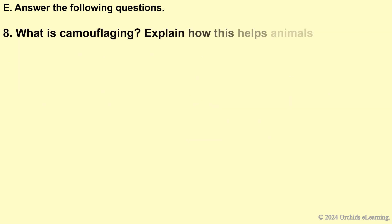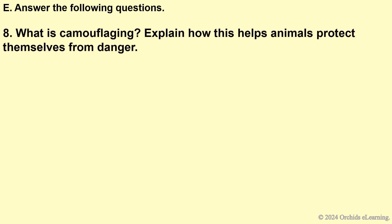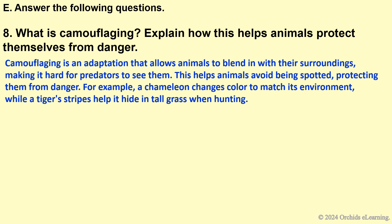What is camouflaging and how does it help animals protect themselves from danger? Camouflaging is an adaptation that allows animals to blend in with their surroundings, making it hard for predators to see them. This helps animals avoid being spotted, protecting them from danger. For example, a chameleon changes color to match its environment, while a tiger's stripes help it hide in tall grass when hunting.